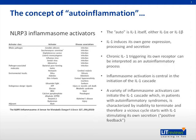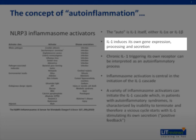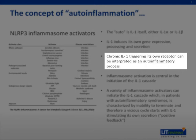Going into a little bit more detail, the word 'auto' in auto-inflammation is basically interleukin-1 itself, either interleukin-1-alpha or interleukin-1-beta. The most recent data support the role of IL-1-beta as more critical than IL-1-alpha. IL-1 can induce its own gene expression, processing, and secretion, so IL-1 can chronically trigger its own receptor, which leads to the production of more IL-1. This positive feedback loop is interpreted in immunology and rheumatology as an auto-inflammatory process.